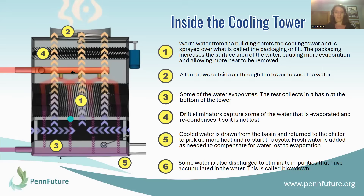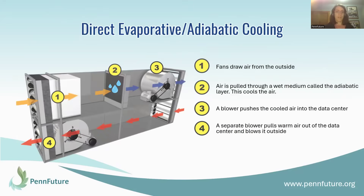Due to evaporation, a portion of the water is lost, so new water gets pumped in to make up for that difference. Also due to the evaporation cycle, impurities can become concentrated in the water, so periodically water needs to be discharged to eliminate these impurities — a process called blowdown. Another system that can use water for cooling is called direct evaporative or adiabatic cooling. In this type of system, a fan draws air from the outside and blows it through a wet medium called the adiabatic layer. This cools the air, which then gets blown into the building, while the other half of the system takes warm air from the building and blows it back outside.